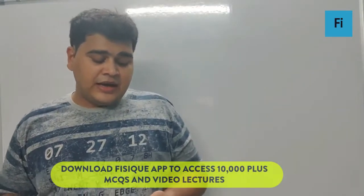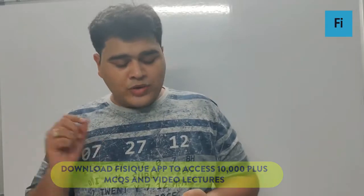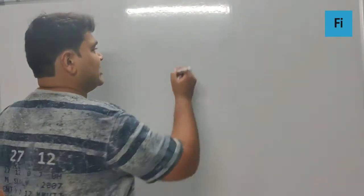So guys, the next question says a ray of incident light at an angle of incidence i on one surface of a small angle prism with angle of prism capital A emerges normally from the opposite surface. If the refractive index of the material of the prism is μ, then the angle of incidence is nearly equal to... So basically...